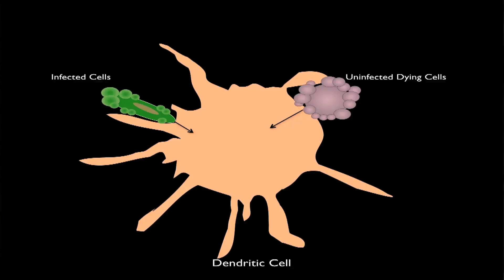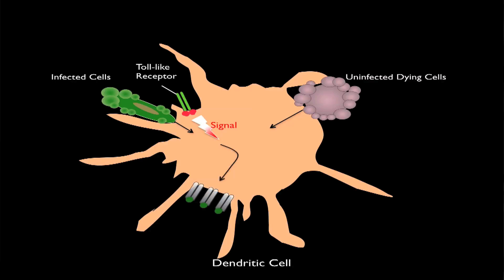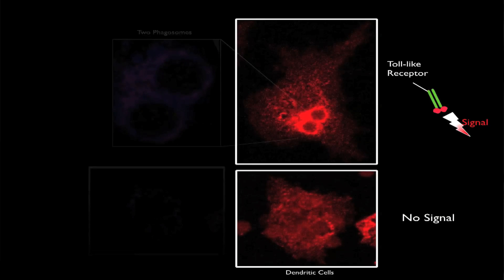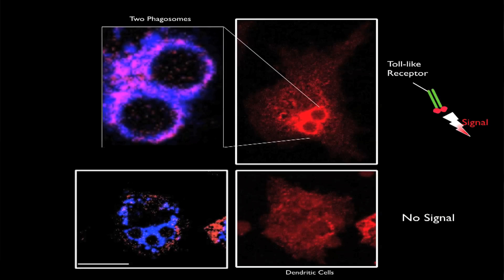This selective process of cross-presenting microbial peptides is regulated through a set of receptors called toll-like receptors that signal when they detect microbial components. We found that MHC class 1 molecules, indicated here by red, get delivered only to phagosomes, marked here by the blue color, that contain microbial ligands, which engage signal transduction by toll-like receptors. It turns out that MHC class 1 delivery to phagosomes is the rate-limiting step dictating the efficiency of cross-presentation.